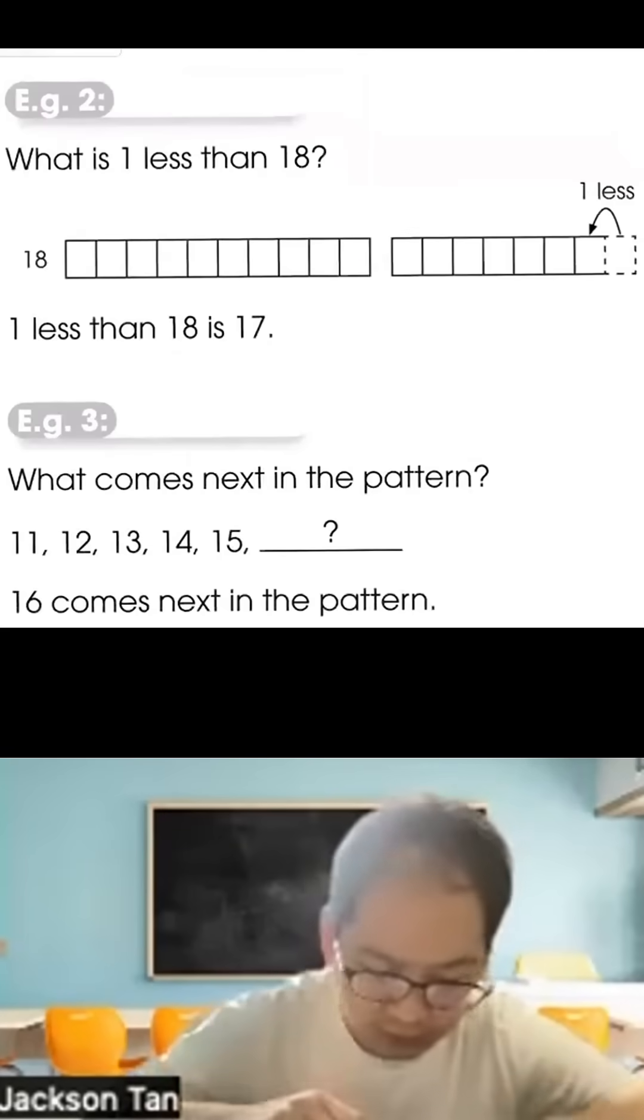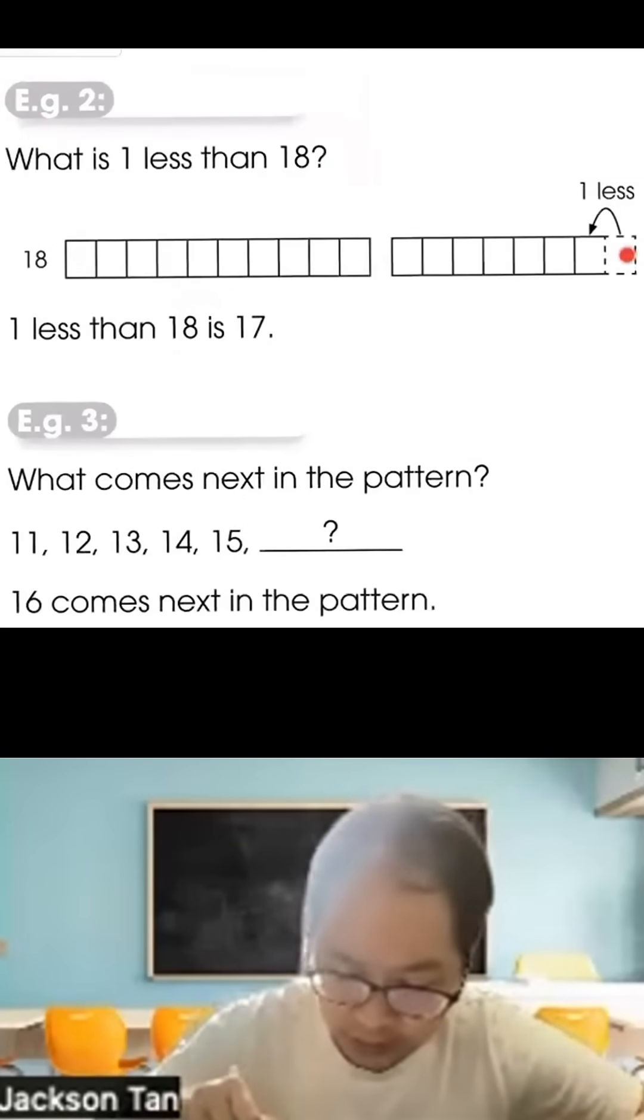How about 1 less than 18? There are 18 blocks. Take away 1 and it becomes 17. So 1 less than 18 is 17.